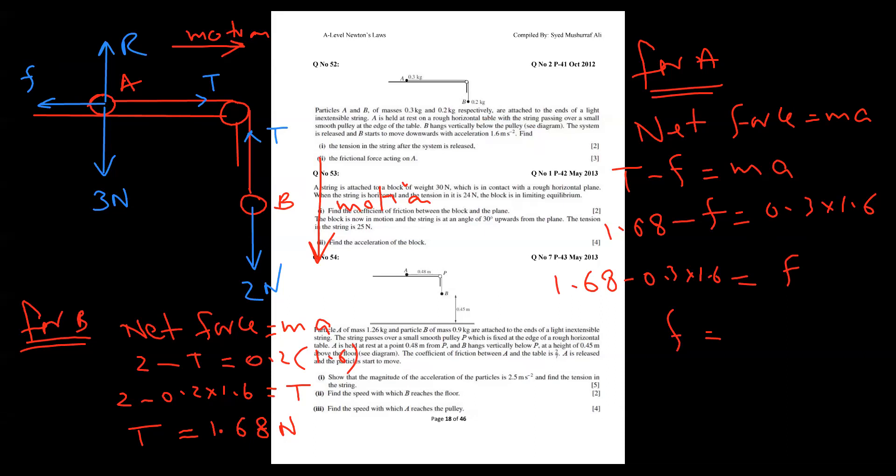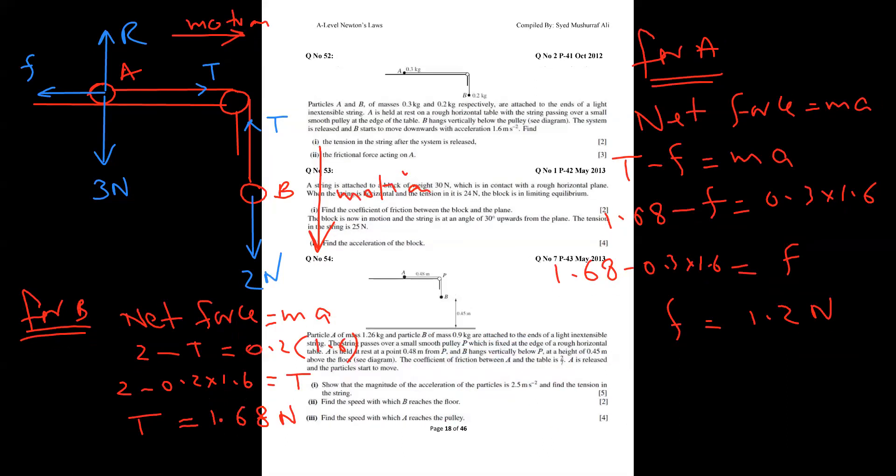1.68 minus 0.3 times 1.6. Alhamdulillah, I got 1.2 newtons. If he asked me - he's not asking here - he's asking friction force acting on A, I got it. If he asked you mu, so mu is not a hard job. F equals mu R, so mu equals F upon R. You can put this value 1.2 in place of F, and R is 3, so you can find easily. The concept is very clear.